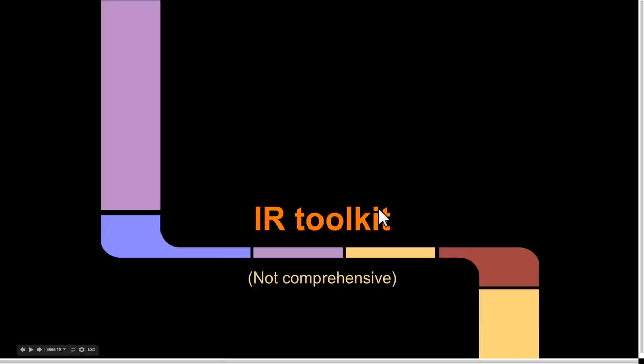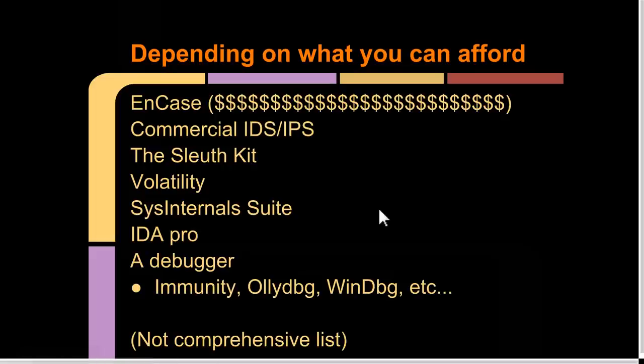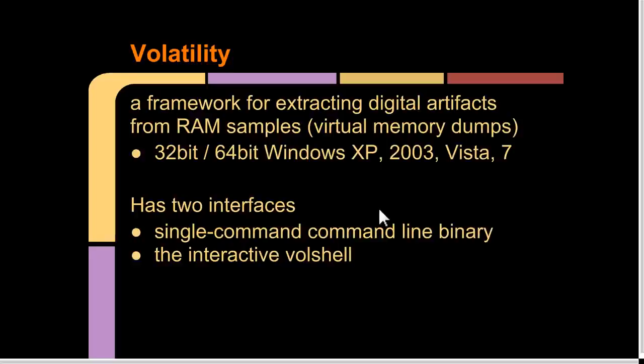Let's talk about the toolkit and get to technical stuff. If you have a ton of money, you might be able to afford something like EnCase, which is $25,000 or so per CD key. Hopefully there's an intrusion detection system on the network — you could use Snort perhaps. The Sleuth Kit, Volatility, and the Sysinternals Suite are all free tools essential for hard disk and memory forensics, as well as process analysis and Windows internals analysis. IDA Pro — although the free version might do the trick — and then your debugger of choice. This isn't even a comprehensive list. Since this talk is mainly supposed to be about Volatility, let's get to it.